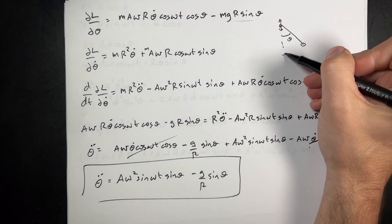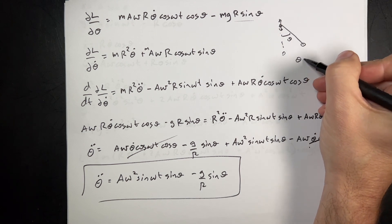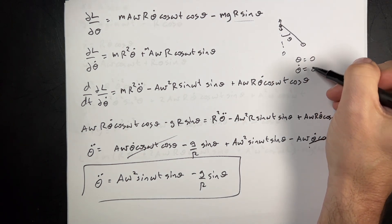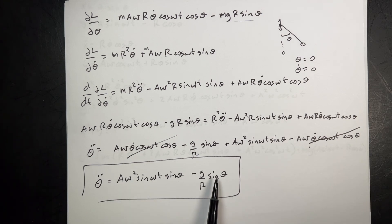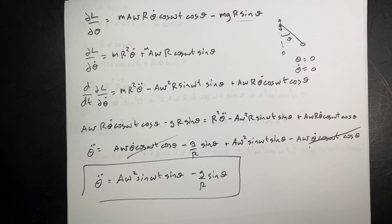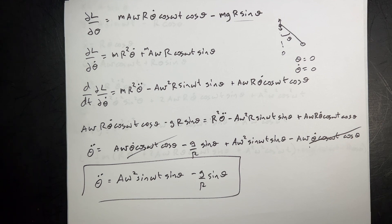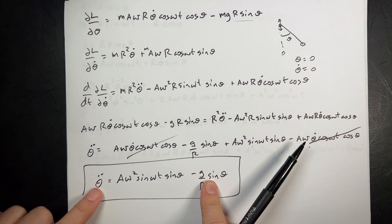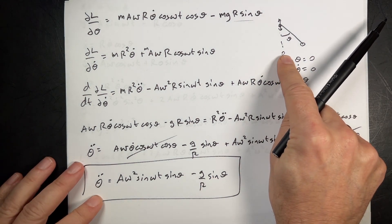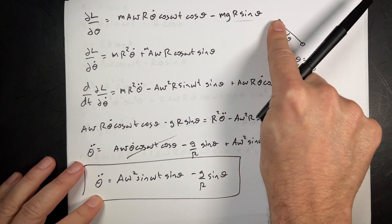What if I start the mass at the bottom with theta equals zero and theta-dot equals zero? Both terms go to zero, so theta-double-dot equals zero. If theta-double-dot is zero, it just stays there. So it doesn't really matter that it's jiggling up and down — it's not going to swing.